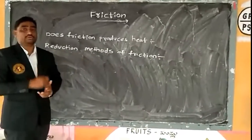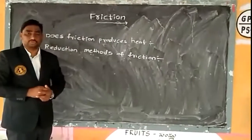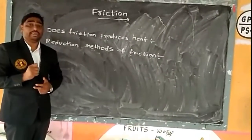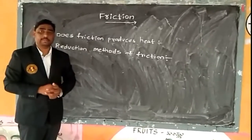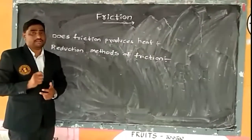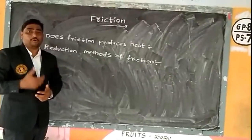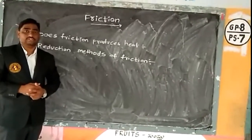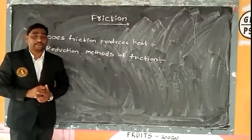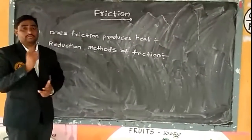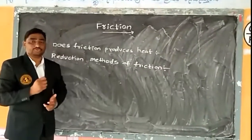I am going to ask you a question: why are the soles of shoes being made rough? Do you know the reason behind it? If they were not rough, while we are walking on a smooth surface, we may slip. So, in order to reduce the friction while we are walking on a smooth surface, the soles of our shoes are made rough.